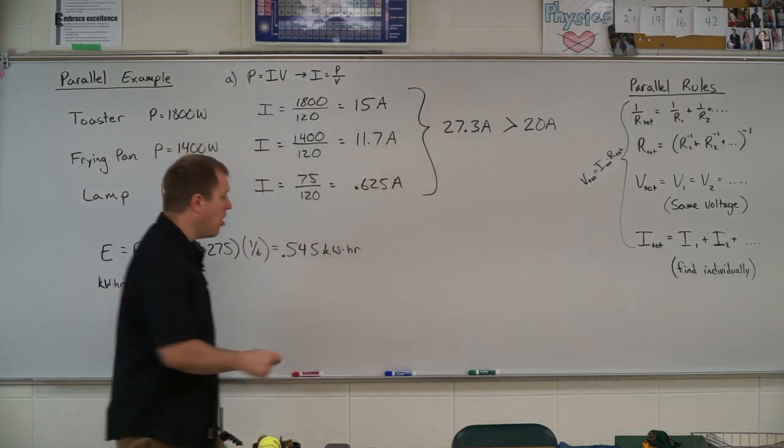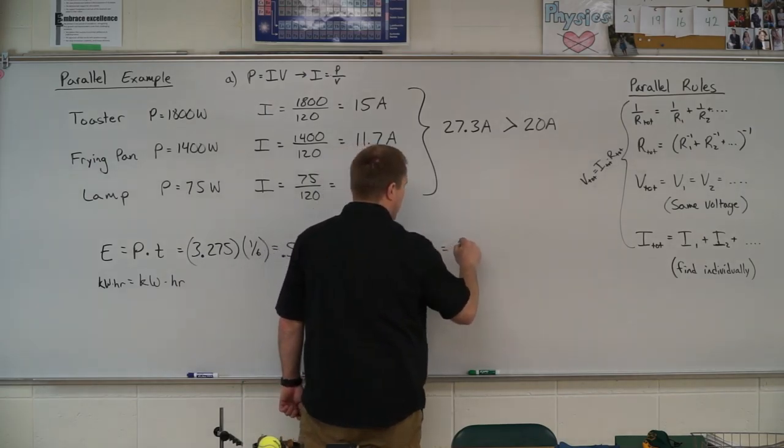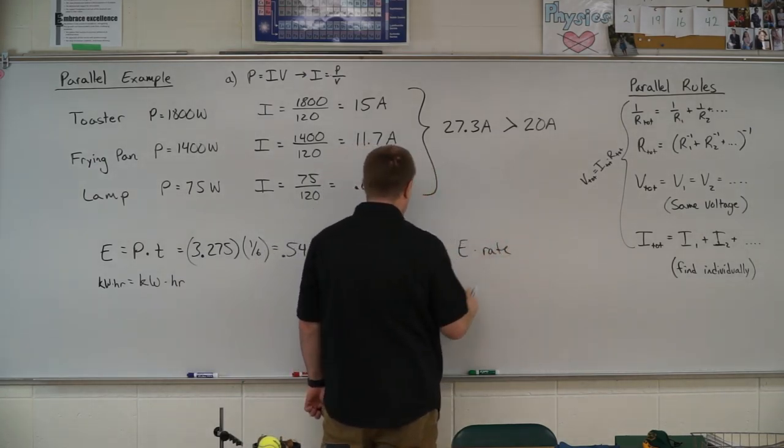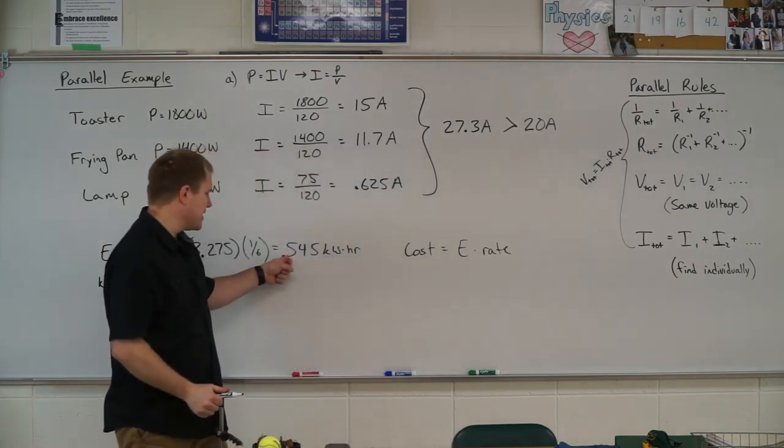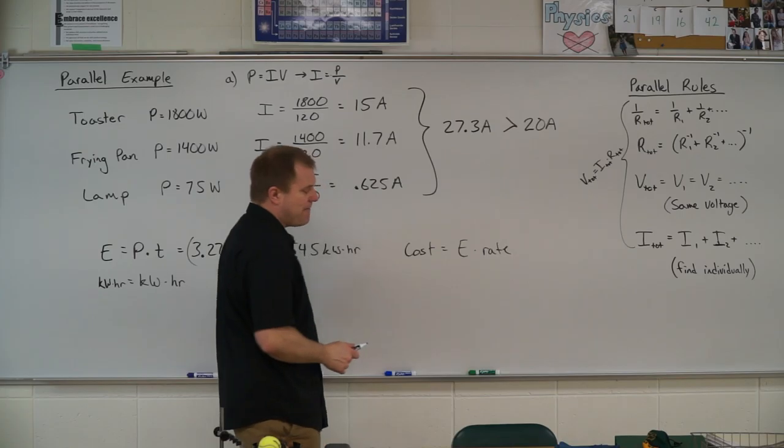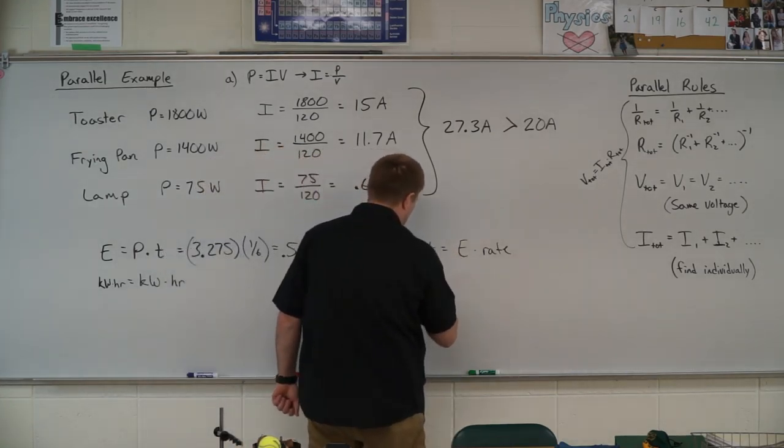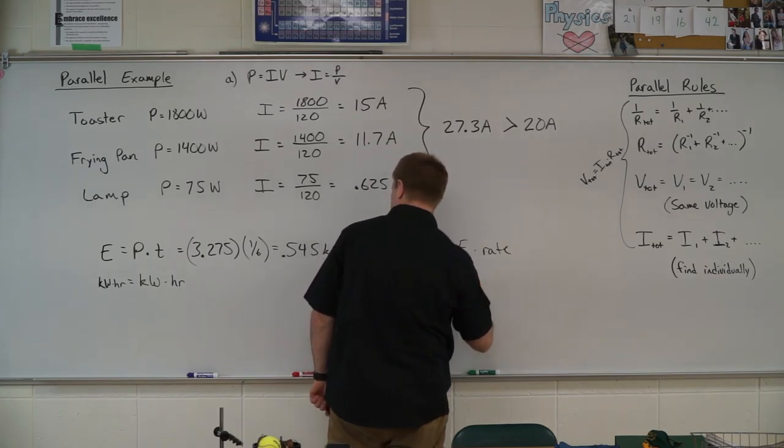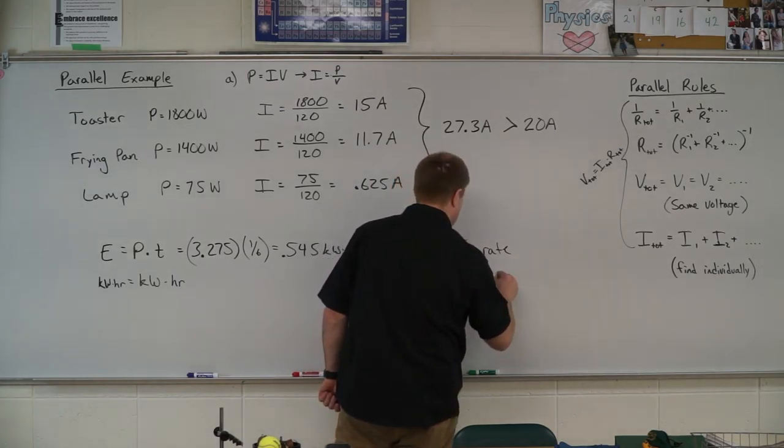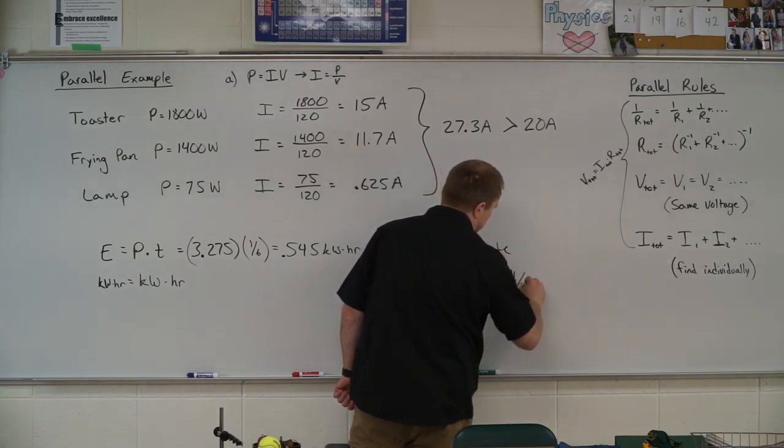Now to find the cost, cost is your energy times your rate. My rate was 10 cents. I'm going to move that decimal place over one more, so 5.45 cents.